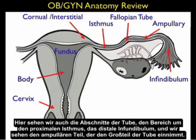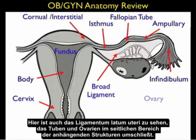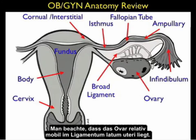Here we also see the portions of the fallopian tube: the proximal isthmal region, the distal infundibulum, and the ampullary region which comprises the majority of the fallopian tube. We also see the broad ligament, which encases the fallopian tube and ovary in the lateral region of the adnexa. Remember that the ovary is relatively mobile within the broad ligament.